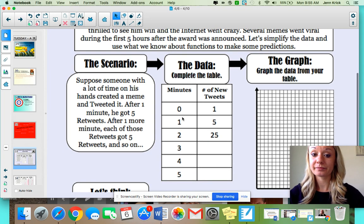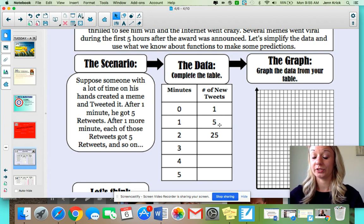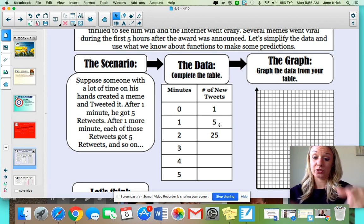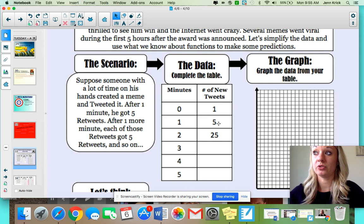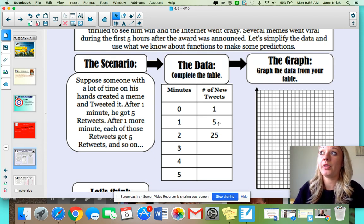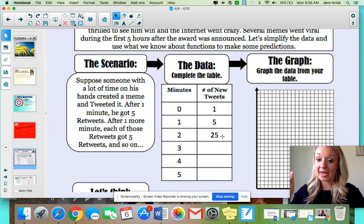After one minute, he got five retweets. After one more minute, each of those retweets got another five and it's so on and so forth. So if you're looking at a data table at zero minutes, there's one tweet. It was the original guy who tweeted out the meme. After one minute, it got five retweets. So that was like five more going to the Twitter universe. After two minutes, each of those five got five more. So you're continuing to multiply by five.